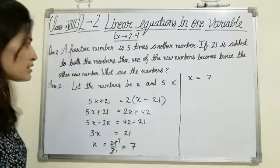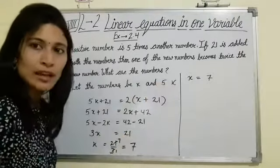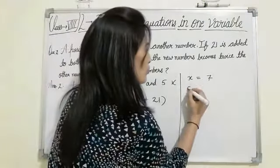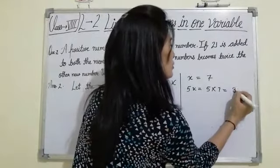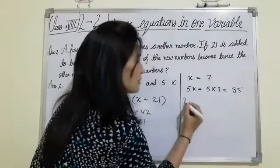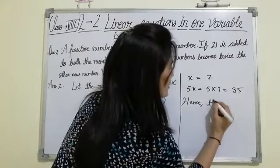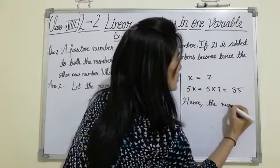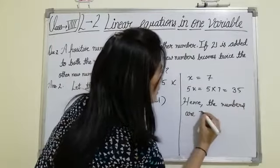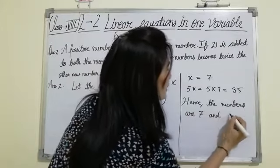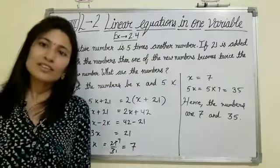Now the other number. The first number is x and the other number is 5x. So 5x equals to 5 multiplied by 7 equals to 35. Thank you.